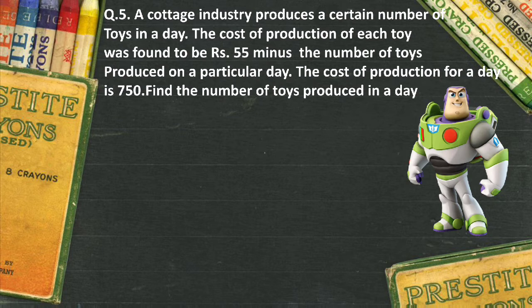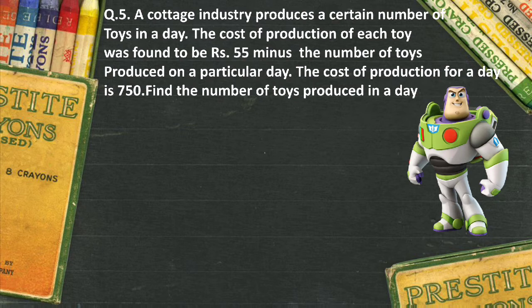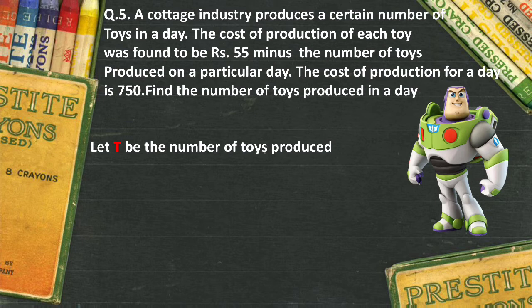Imagine that in the morning when the machine starts and all the raw materials are fed into the machine, the end result is a conveyor belt rolling, and at every roll one toy is shipped out from the machine. Now here we don't know how many toys are being shipped out, which is why let us say that t be the number of toys produced.